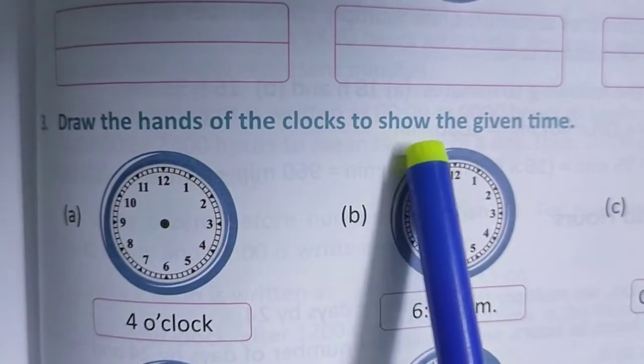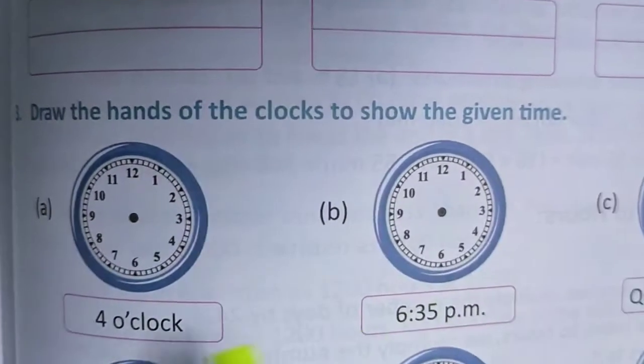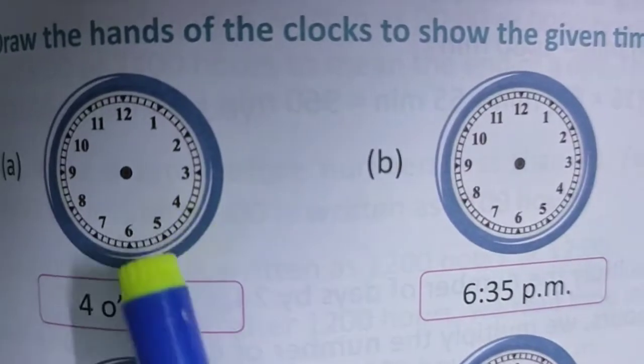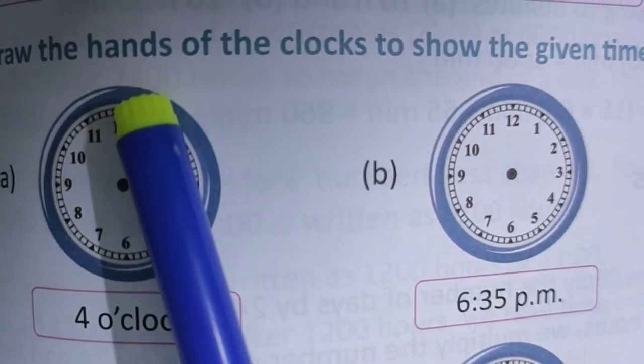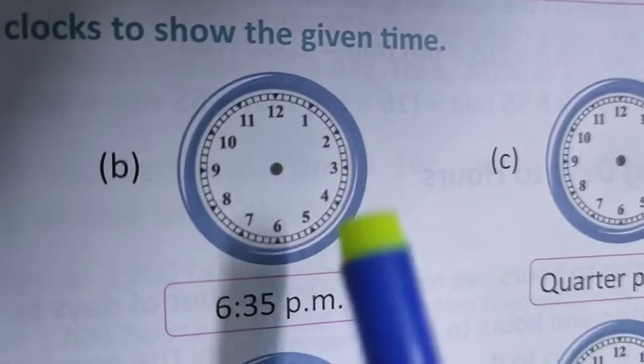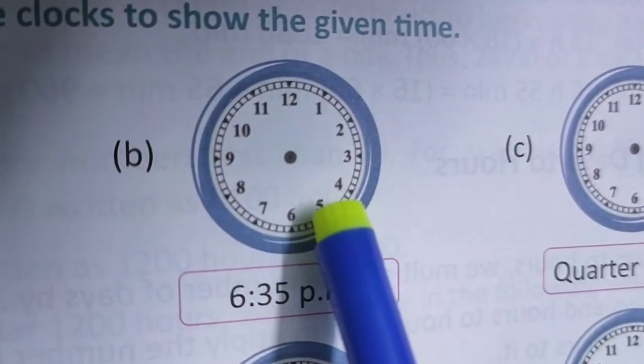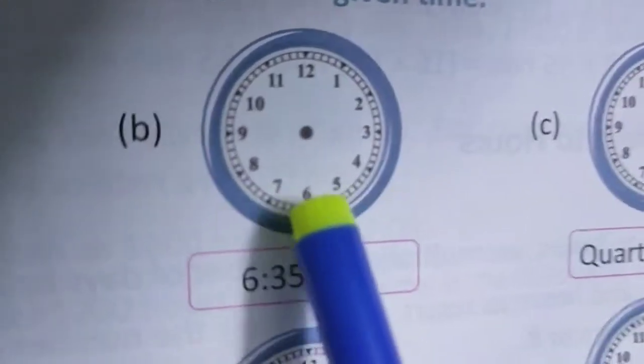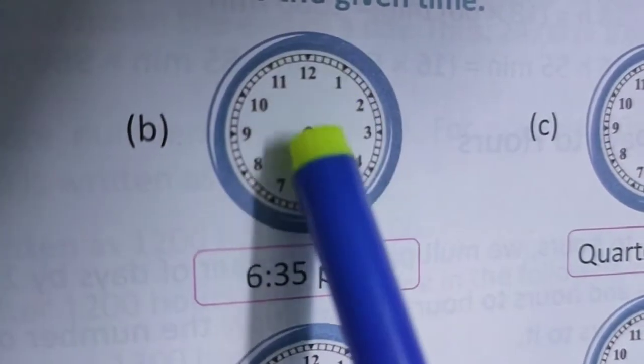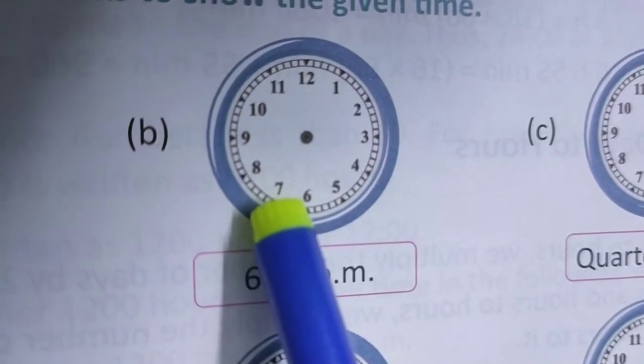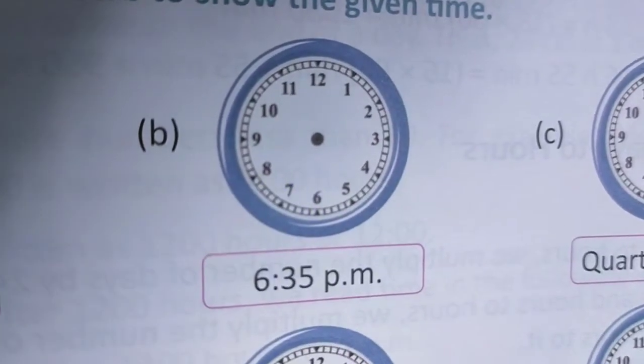Number 3. Draw the hands of clocks to show the given time. That means, 4:00. Hour hand will come to 4 and minute hand will go to 12. 6:35. Hour hand will be between 6 and 7 and 35 minutes. Minute hand will be at 7. 7 into 5 is 35. You complete it in this way.